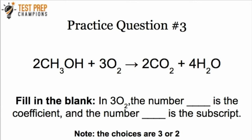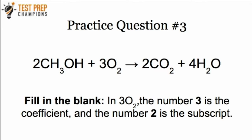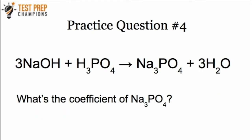Fill in the blank: in 3O2, the number blank is the coefficient, and the number blank is the subscript. The correct answer is that the number 3 is the coefficient in 3O2, and the number 2 is the subscript. Next question: what's the coefficient of Na3PO4? The answer is 1. Remember, the coefficient is the number in front — here we don't see a number in front, so we just assume that it's 1.